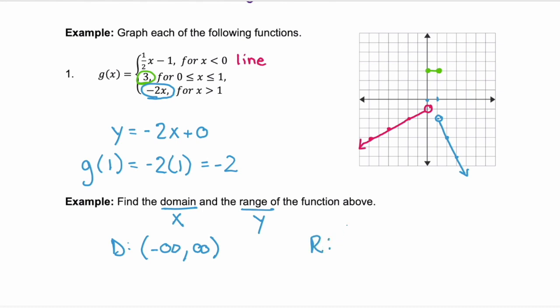Now for the range, you want to start at the lowest y value. Well, notice that the red graph and the blue graph are both pointing downwards towards infinity. So the range is going to go from negative infinity. And then we're going to follow our y axis up to the highest point of our graph, which is where this green line is. And that is at the value of 3. So the largest value of y we ever see is 3. And because our graph is at the value of 3, we'll use a closed bracket.